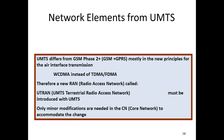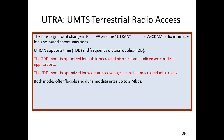Only minor modifications are needed in the core network to accommodate the changes. UTRA, standing for UMTS Terrestrial Radio Access, introduced UTRAN with a WCDMA radio interface for land-based communication. UTRAN supports both time division duplex and frequency division duplex. TDD mode is optimized for public micro and pico cells and unlicensed cordless applications, whereas FDD mode is optimized for wide-range coverage including public macro and micro cells. Both modes offer flexible and dynamic data up to 2 Mbps.